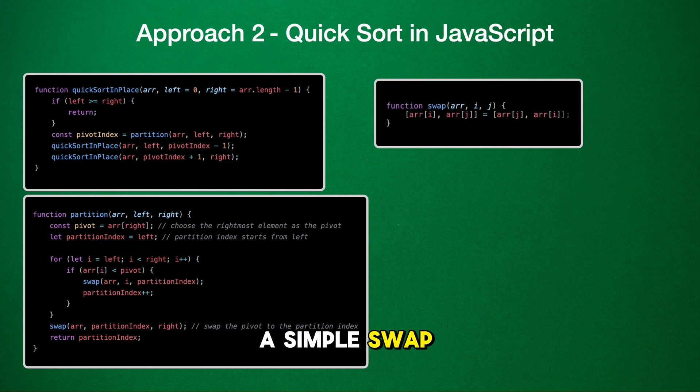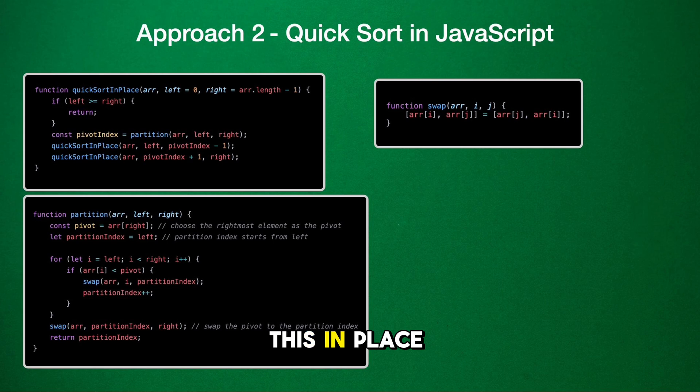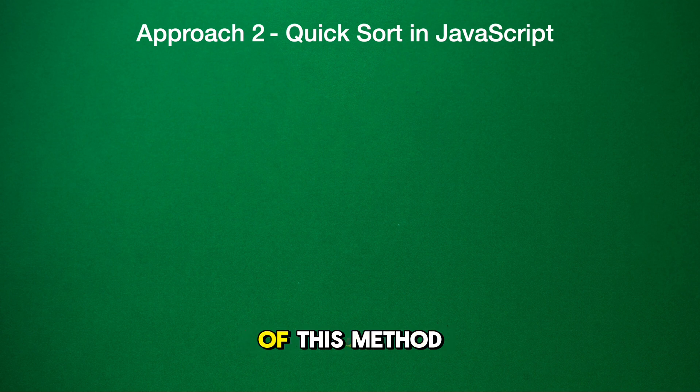Lastly, we have a simple swap function that uses array destructuring to exchange the values at two indices in our array. And there you have it. That's how quick sort works. This in-place version is very memory efficient since it doesn't require allocating additional arrays. Let's examine the pros and cons of this method.